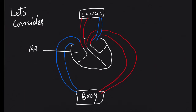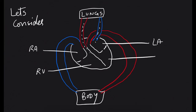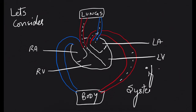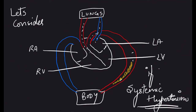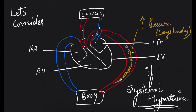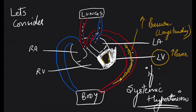Now let's consider our first clinical scenario. The right atrium and right ventricle pump blood to the lungs; oxygenated blood returns via the pulmonary vein to the left atrium, then left ventricle, and is pumped via the aorta to the body. If a person has systemic hypertension, there is increased pressure in the aorta. The left ventricle has to pump blood against a higher pressure system, requiring more power, so if left ventricle needs more power it will undergo hypertrophy.